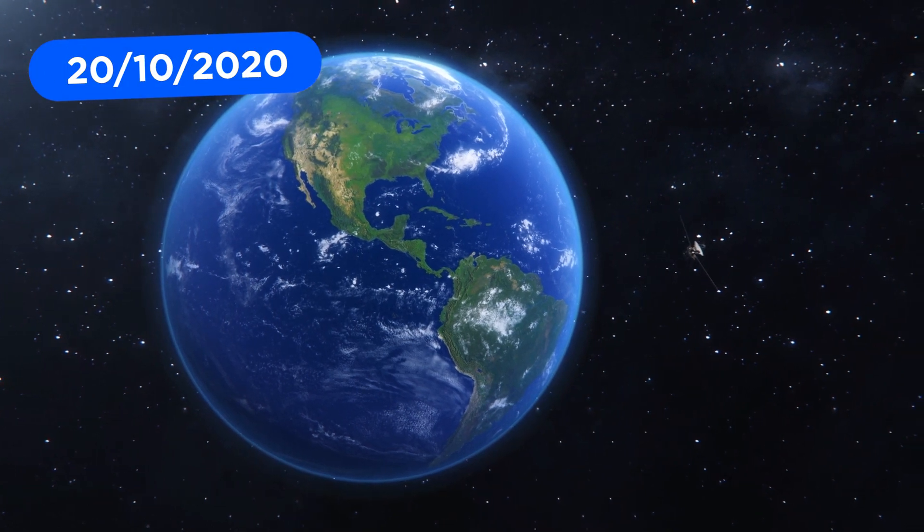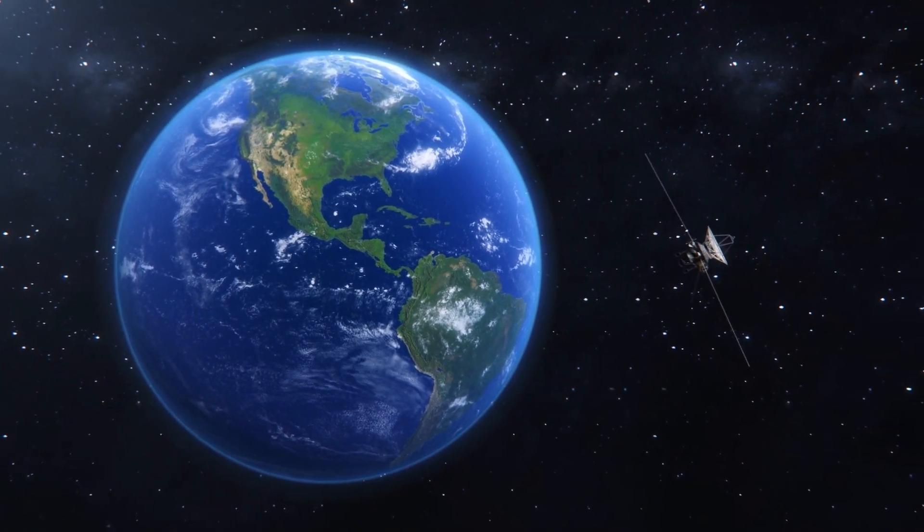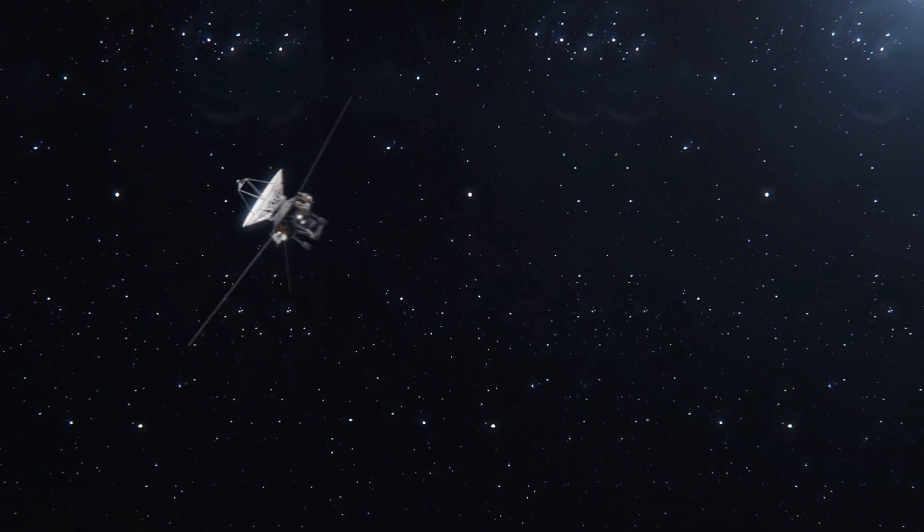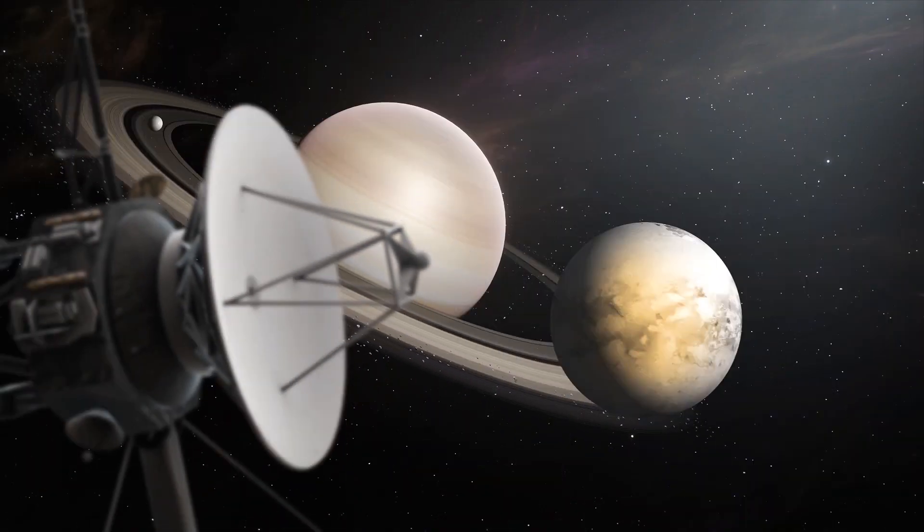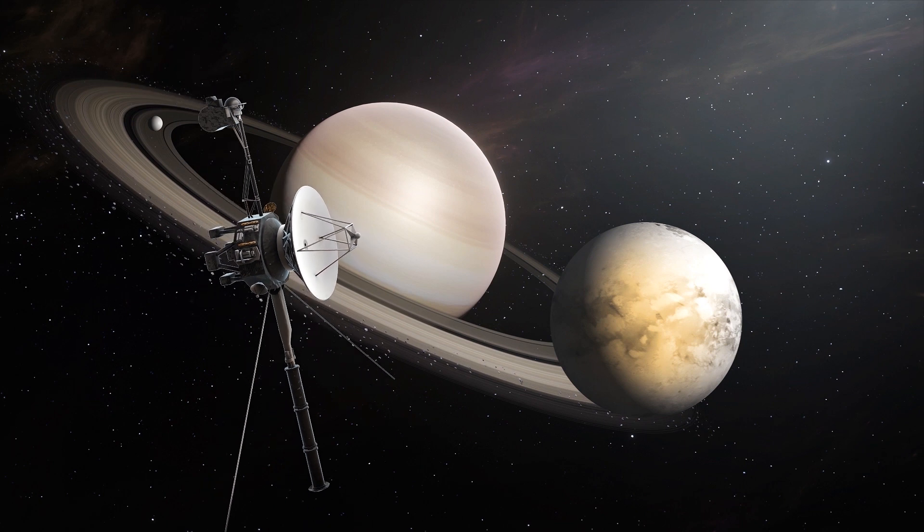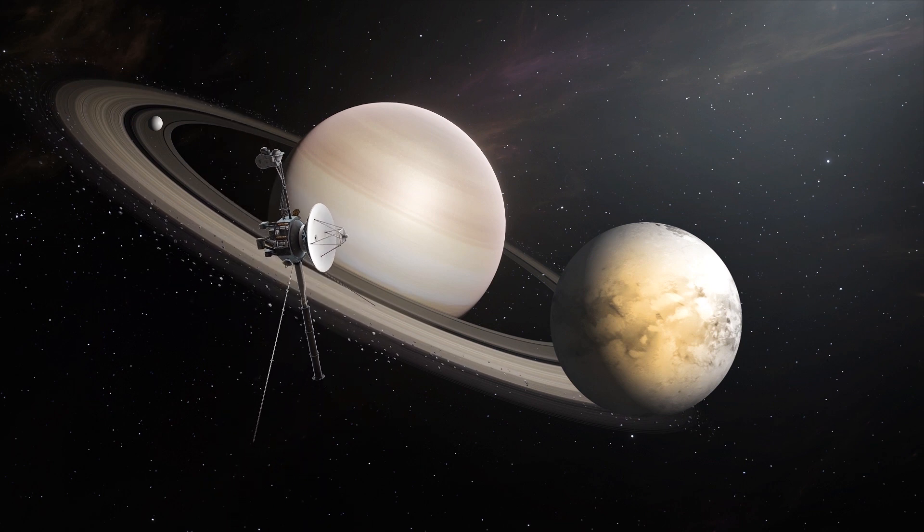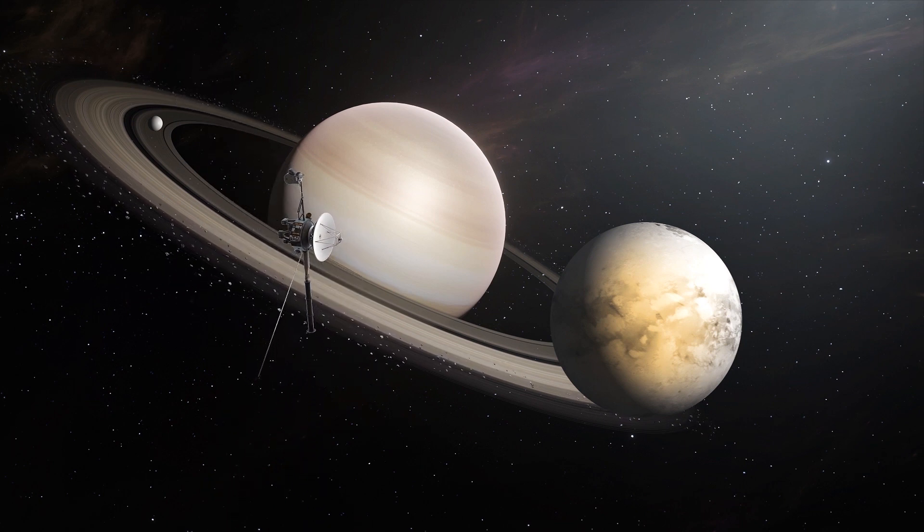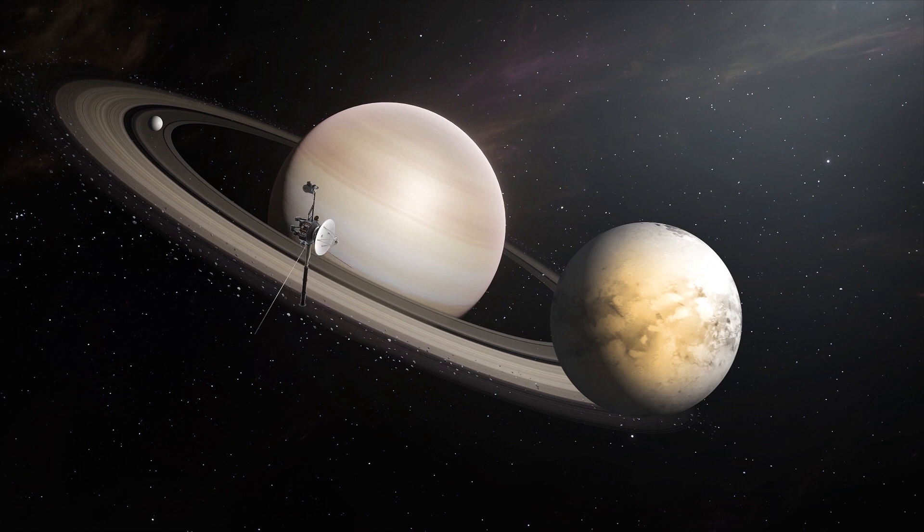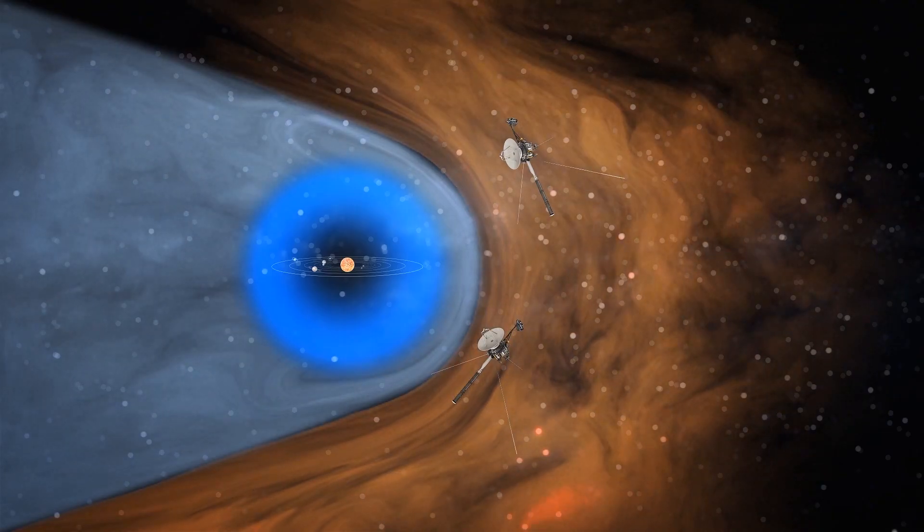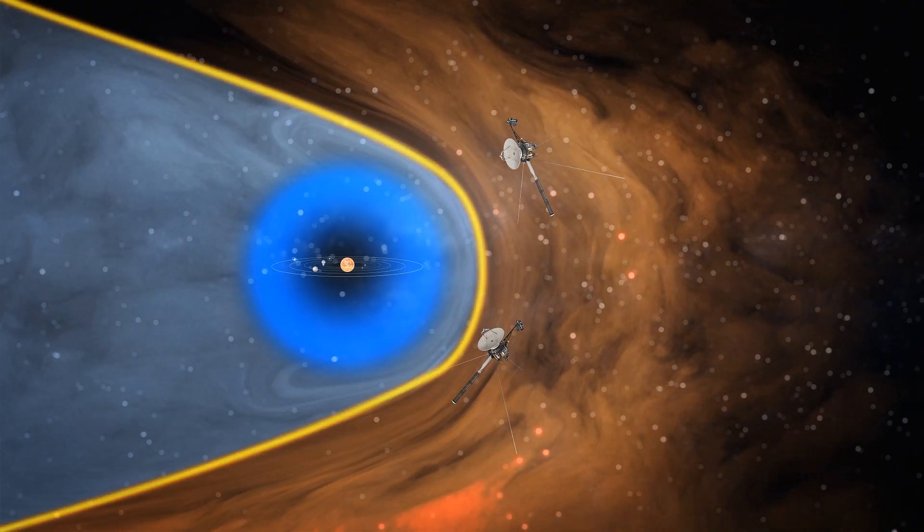NASA's Voyager 2 crossed into interstellar space in November of 2018 after a 41-year voyage, but its mission is far from over. According to research published in the journal Astrophysical Letters, as Voyager 2 moves farther from our solar system, the density of space is increasing. This supports findings from Voyager 1, which entered interstellar space at a different location in 2012.